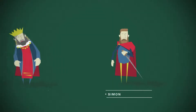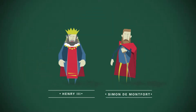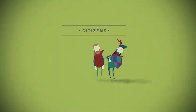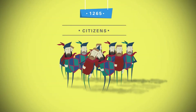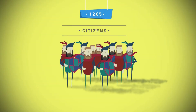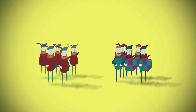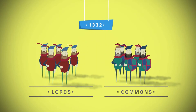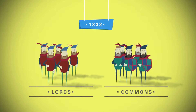Fifty years later, Simon de Montfort rebelled against Henry III and for the first time invited representatives of the towns, together with the Knights of the Shires, to his 1265 Parliament. These citizens met separately from the nobility and evolved to form the House of Commons in 1332. So now there are two houses: the House of Commons and the House of Lords.